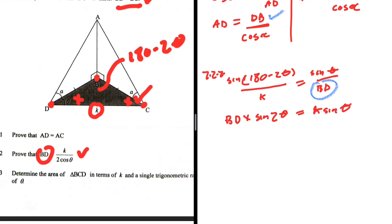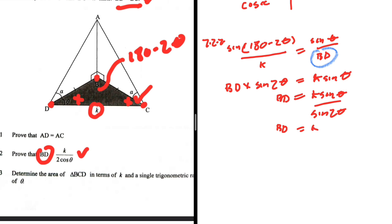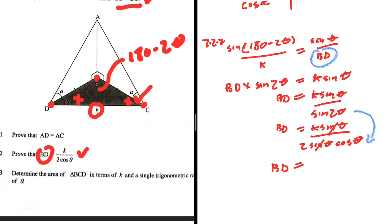So BD = k·sin(θ)/sin(2θ). Using the double angle identity sin(2θ) = 2sin(θ)cos(θ), we get BD = k·sin(θ)/(2sin(θ)cos(θ)). Cancelling sin(θ) gives BD = k/(2cos θ), which proves 7.2.2.